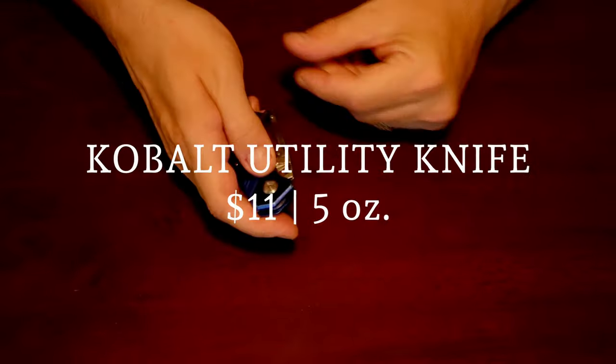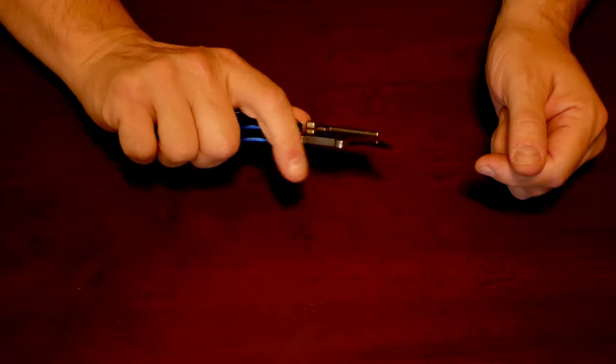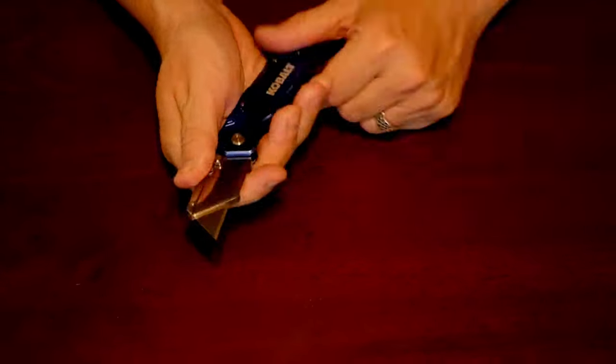In addition to the multi-tool, I've got a box cutter. This is the Cobalt Utility Knife Speed Opening. It combines the features of a locking folder knife with a box cutter.